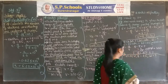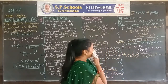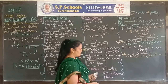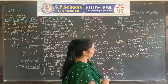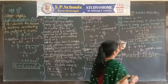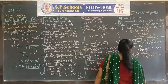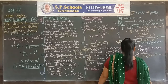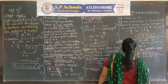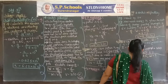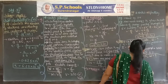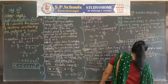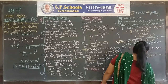If the potential difference between two points is 12 volts and the charge is 2 coulombs, how much energy will be found? Using V = W/Q, making W the subject: W = V × Q = 12 × 2 = 24 joules.